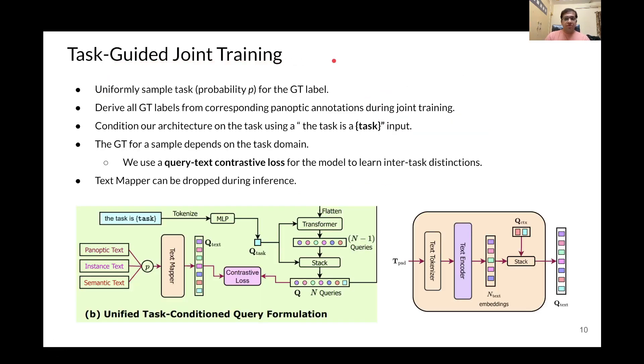A core contribution of OneFormer is its task-guided joint training strategy, where we uniformly sample the task for the ground-truth label during training and derive all the ground-truth labels from a single set of panoptic annotations. Then, we condition our architecture on the task using a text input of the form 'The task is [task]', where the task can be panoptic, instance, or semantic.